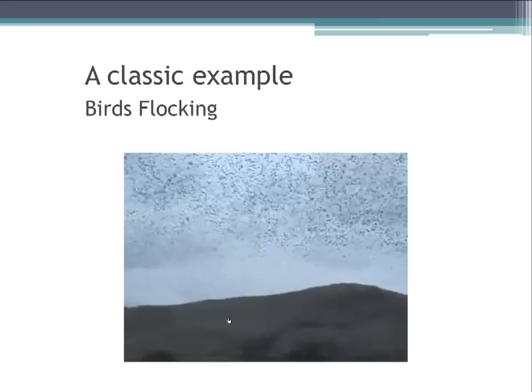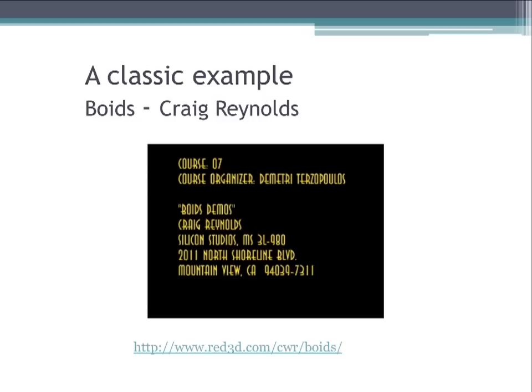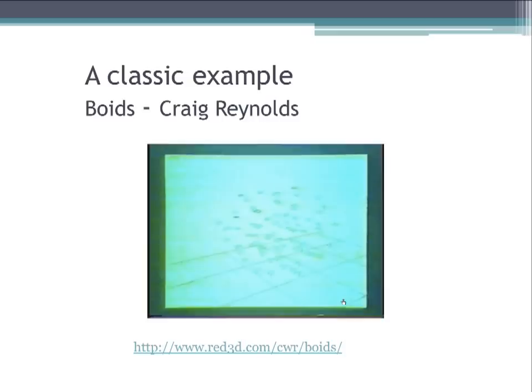It was once thought that this phenomenon of birds flocking was caused by a leader bird that was being followed by all the other birds. In the 1980s, Craig Reynolds came up with three simple rules to simulate flocking behavior. Each bird steered to avoid crowding local flock-mates, steered towards the average heading of local flock-mates, and steered towards the average position of local flock-mates. With these three simple rules, he reproduced animations of birds flying in flocks.